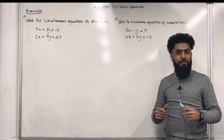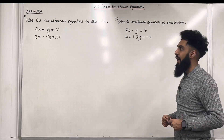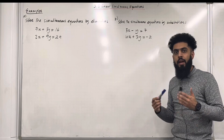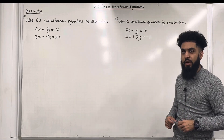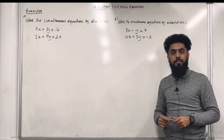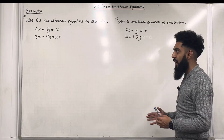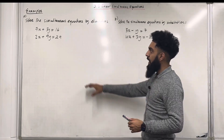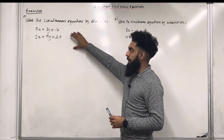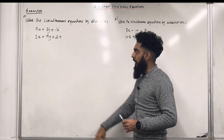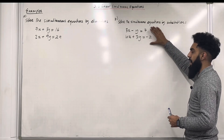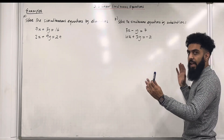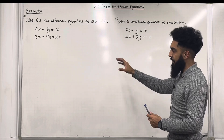Welcome back ladies and gents. In this particular teaching video I'll be looking at 3.1 linear simultaneous equations. 3.1 represents chapter 3, section 1 of the Pearson A-level Maths Pure Maths Year 1 textbook. I've got two examples up on the board. Part A: solve the simultaneous equations by elimination. Part B: solve the simultaneous equations by substitution. These are two different techniques. Let's have a look at Part A.